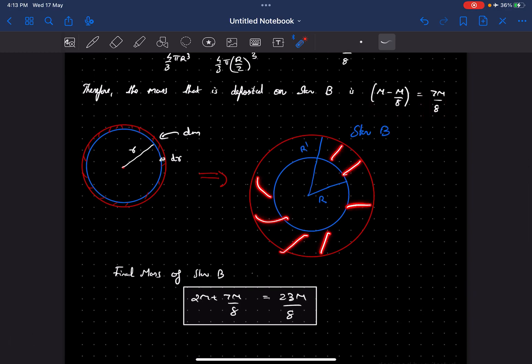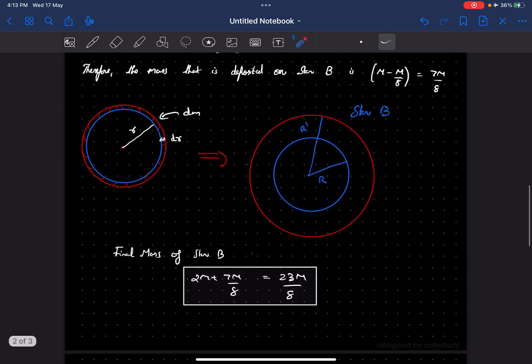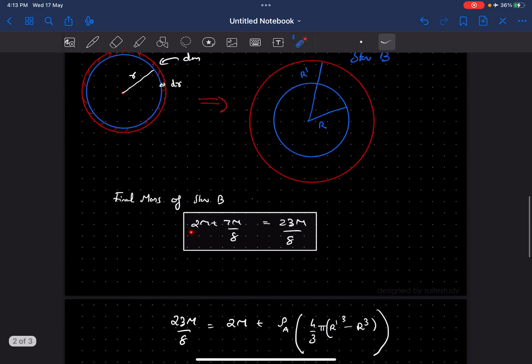Right, this shaded region is the 7m by 8 that is deposited on planet B. So I can write the final total mass of planet B would be 2m, which is the mass of this blue part, which is the initial state of planet B.